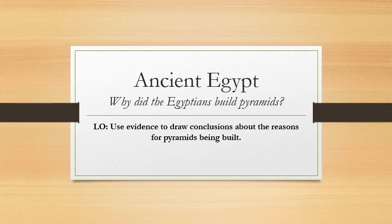Hello Year Three, it is Miss Wilkinson again. We are going to do another history lesson this morning based on ancient Egypt. Your key question today is why did the Egyptians build the pyramids? You may already have some ideas about that because we have touched on it, and you may have done your own research. Your learning objective today is to use evidence and draw conclusions about the reasons for the pyramids being built.